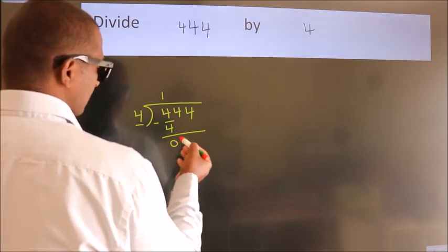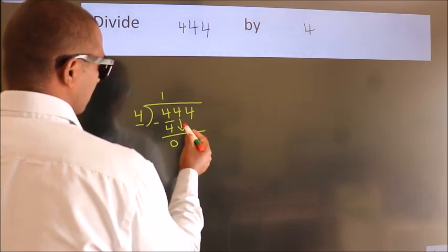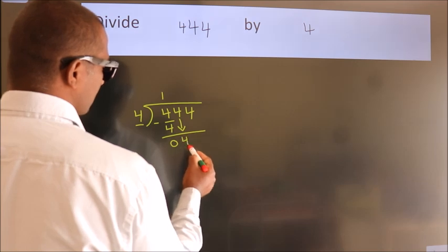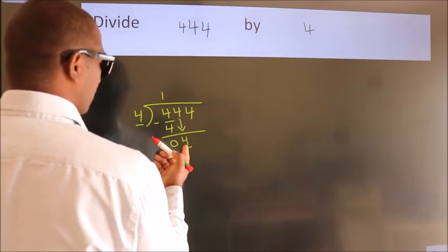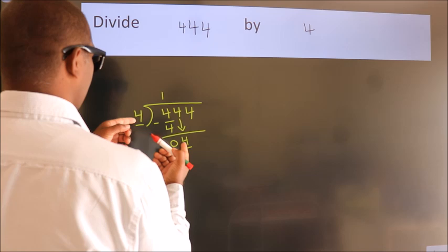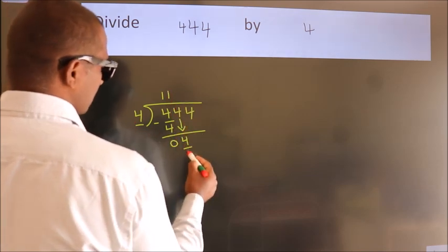After this, bring down the beside number. So 4 down. So 4. When do we get 4? In 4 table. 4 once, 4.